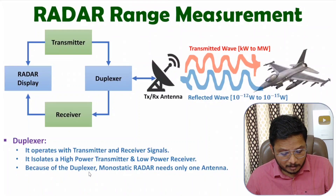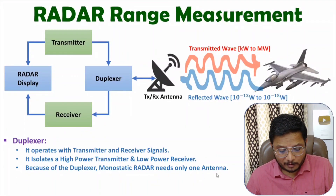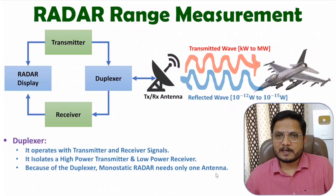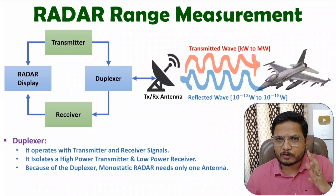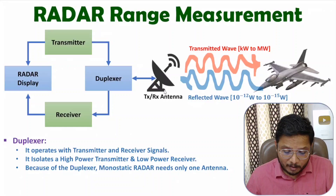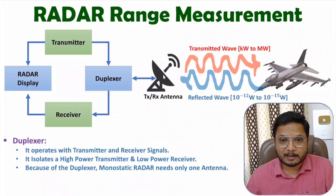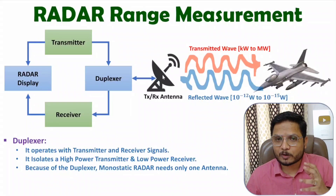The duplexer isolates the high power transmitter and the low power receiver. Because of the duplexer, in a monostatic radar system we need only one antenna. When you have one antenna with a radar system, it is called a monostatic radar system.